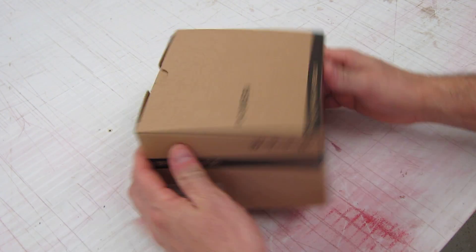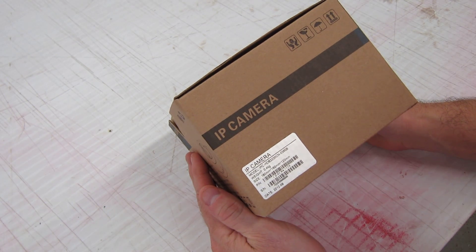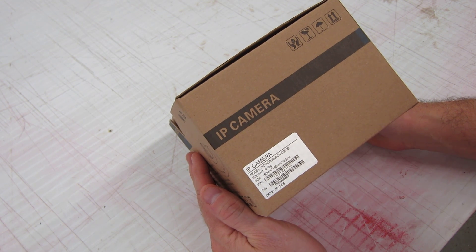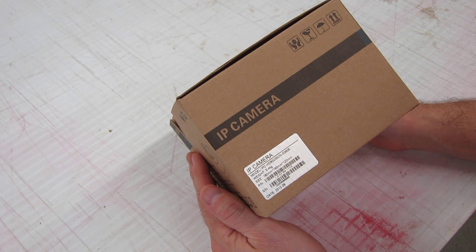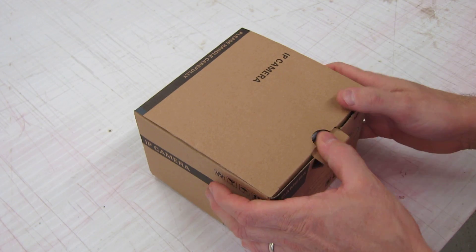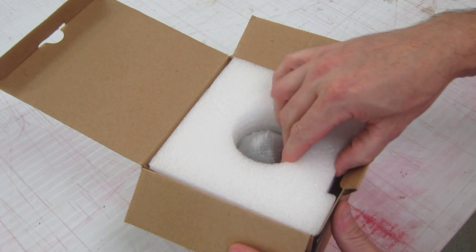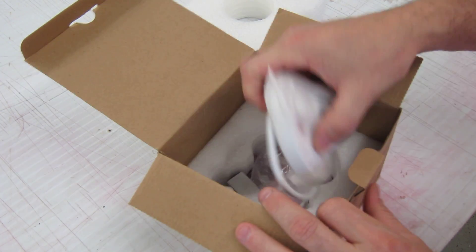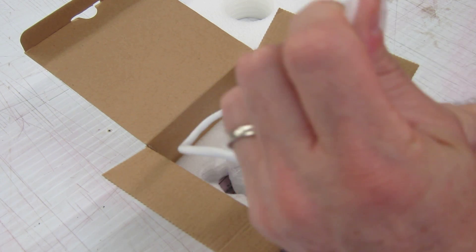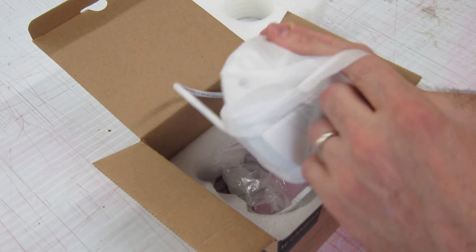Here's the Dahua IPC-HDB3200CN, a 2-megapixel NTSC camera. First thing you'll notice is it's not very large, despite the fact that it's 2 megapixels.